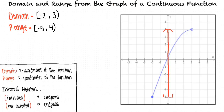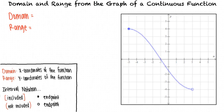Let's take a look at another example. To find the domain, we look at the x-values included in the function. The x-value furthest to the left is negative 5, and the x-value furthest to the right is 3, but that endpoint is an open circle, so the x-values get really close to 3 without ever reaching 3. So our domain in interval notation is [−5, 3).